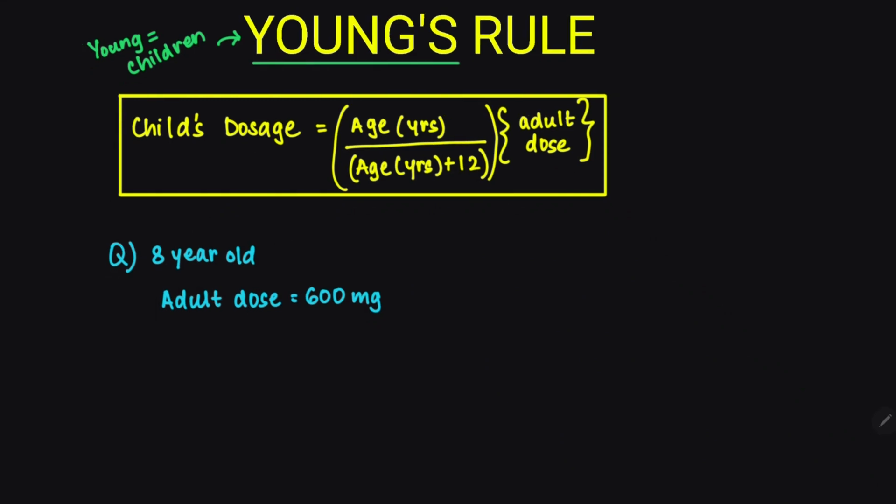So let's solve. If we plug in the values in the formula, age in years is 8. 8 upon age in years plus 12. So 8 plus 12, into adult dose which is 600. That's 8 upon 20 into 600.